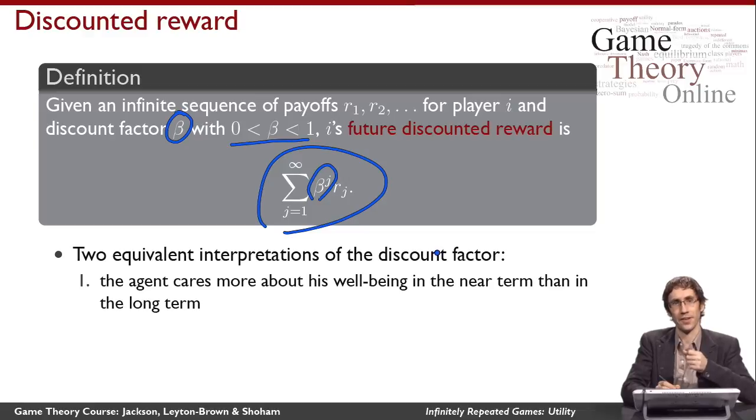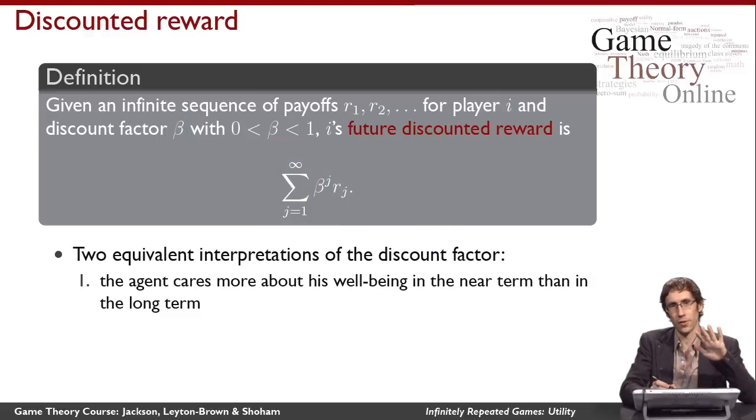So the first one is going to have the discount factor applied once. The second one is going to have the discount factor applied twice. So I'm going to get the discount factor squared and so on, all the way through the sequence. So each of them is going to be diminished, but each of them is still going to matter.